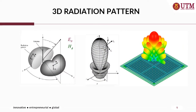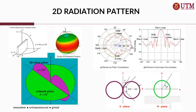This slide shows some 3D representations of the radiation pattern. Next is the 2D radiation pattern, which is basically an extraction or cut from the 3D pattern at some plane. For example, if we cut it somewhere here and look from the top, we may see a certain shape from above.